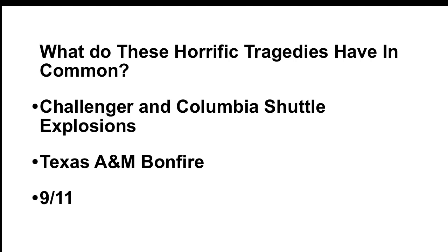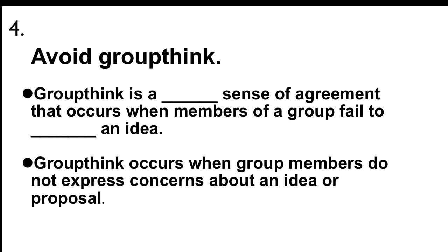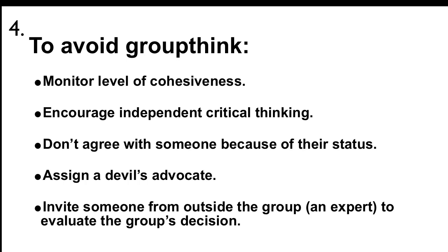What do these four horrific tragedies have in common? The Challenger and Columbia shuttle explosions, the A&M bonfire collapse, and 9-11. Groupthink. Groupthink is a false sense of agreement that occurs when members of a group fail to challenge an idea. It occurs when group members do not express concerns about an idea or proposal. To avoid groupthink: monitor your level of cohesiveness, encourage independent critical thinking, don't agree with someone just because of their status, assign a devil's advocate, and invite someone from outside the group — an expert — to evaluate the group's decision. Keep in mind that it's easy for the most gifted and bright individuals to fall victim to groupthink if they're not vigilant.